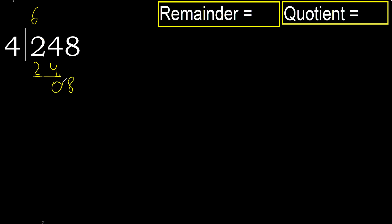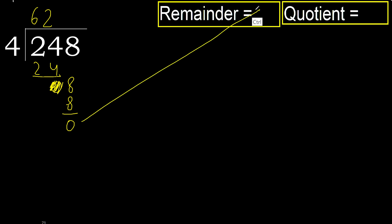Eliminate the 0 on this side. Bring down 8. 4 multiplied by 3 is 12 — greater. 4 multiplied by 2 is 8 — not greater. Subtract. 0. Next — there is no number, therefore finish.